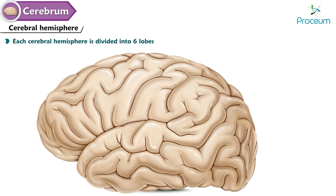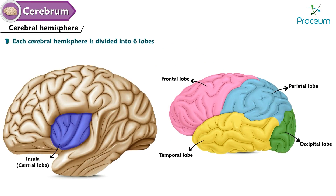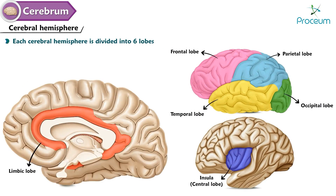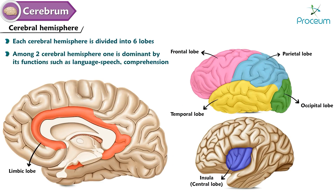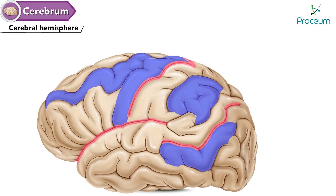Each cerebral hemisphere is divided into six lobes: the frontal lobe, parietal lobe, temporal lobe, occipital lobe, insula (the central lobe), and the limbic lobe. Among the two cerebral hemispheres, one is dominant for functions such as language, speech, and comprehension. The cerebrum is full of grooves and ridges called sulci and gyri respectively.